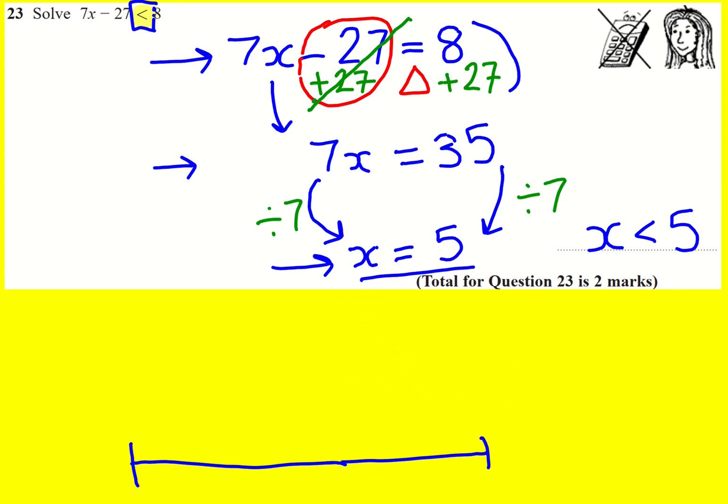Imagine if you've got 5, 4, 3, 2, 1, 0, minus 1. Hopefully this is looking a bit familiar.